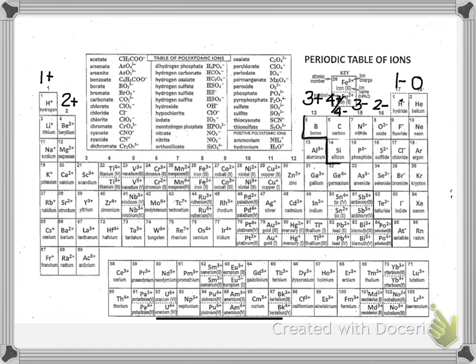So this stair-step line here, this is what separates the metals and the non-metals. So up to this point, we've really only talked about metals with only one charge. And I like this periodic table because it has the charges within the elements box. And so you'll notice that the main group elements, especially group 1a and 2a, they all just have one charge.